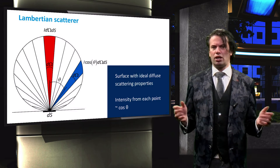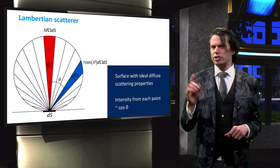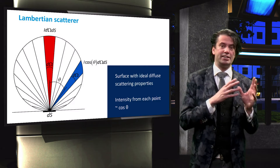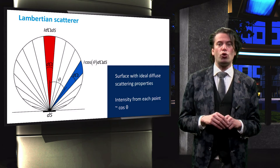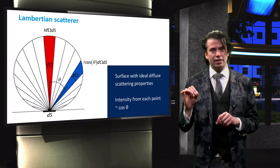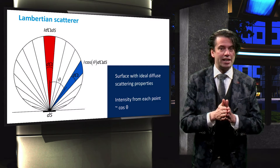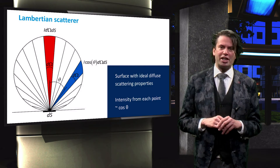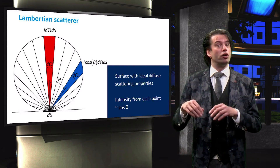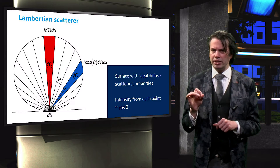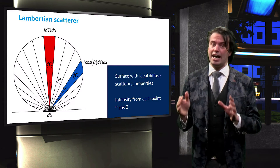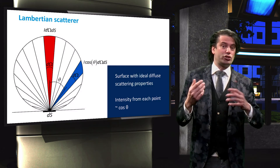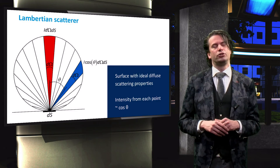Lambert's cosine law states that the radiance or light intensity observed at area ds is directly proportional to the cosine of theta, where theta is the angle between the direction of the incident light and the surface normal. If Lambert's cosine law holds true after scattering off a surface, that surface is called a Lambertian scatterer. This means that the intensity scattered by area ds observed at any angle is proportional to cosine theta, and as such decreases with increasing angle from the normal.